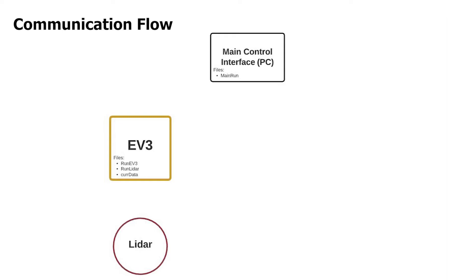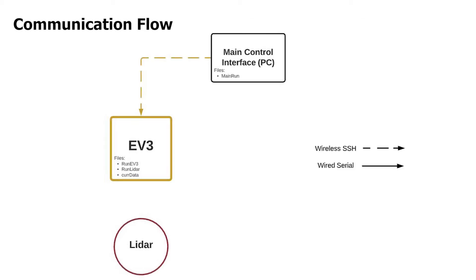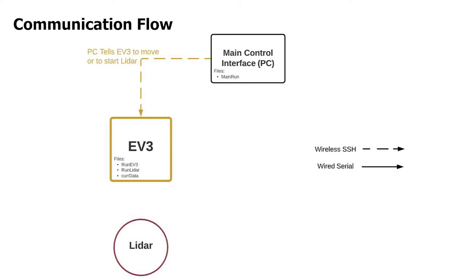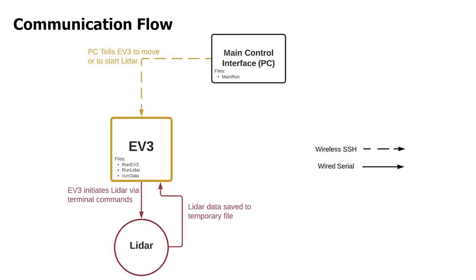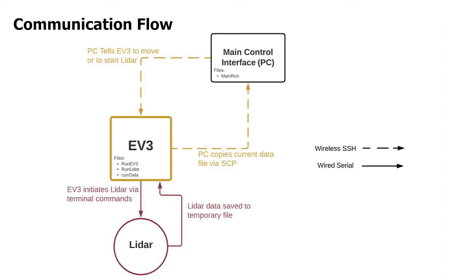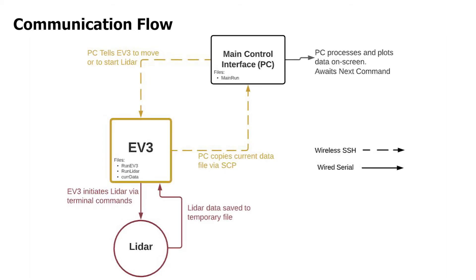There's also a temporary current data CSV file where all of the data the LiDAR collects is saved and then accessed by my PC. The way the system works, starting from the beginning, is my PC tells the EV3 to move or to start the LiDAR after initiating the SSH connection. The EV3 initiates communication with the LiDAR through terminal commands, requesting a certain number of points. Once collected, all that data is saved to the current data file. The LiDAR takes data in polar coordinates, so the EV3 converts those into X and Y coordinates. All four data points — angle, distance, X coordinate, and Y coordinate — are saved to the current data file, which I can then wirelessly SCP onto my computer to process and plot, so I can decide where to move for further exploration.